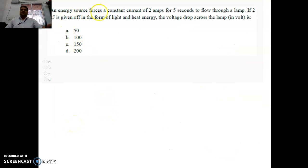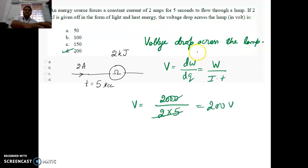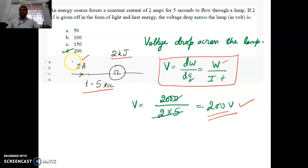Next question. An energy source forces a constant current of 2 amperes for 5 seconds to flow through a lamp. If 2 kilojoule is given off in the form of light and heat energy, the voltage drop across the lamp is how much? It is a very simple question. Simply a bulb is connected, 2 ampere is flown through it for 5 seconds. We know that voltage equals rate of change of energy with respect to charge dW by dQ. Substitute the value W by I into T. After substituting, we get the voltage is 200 volts. The answer is D.